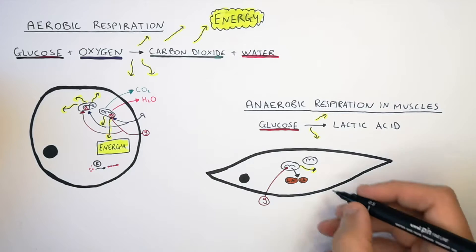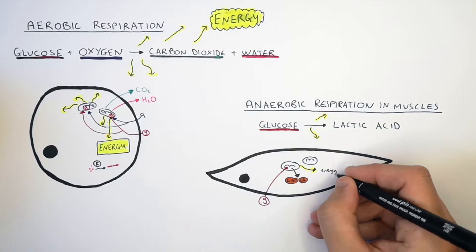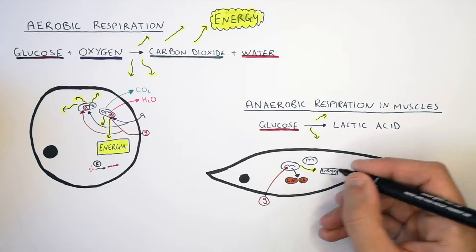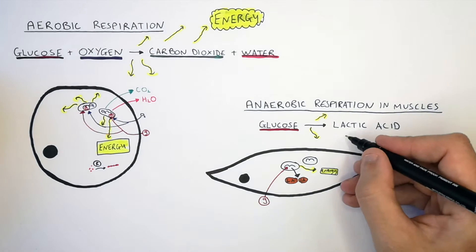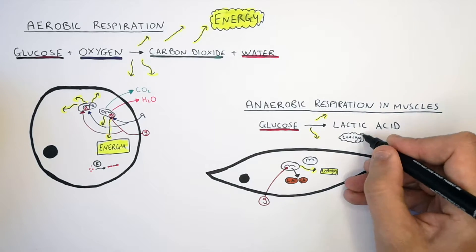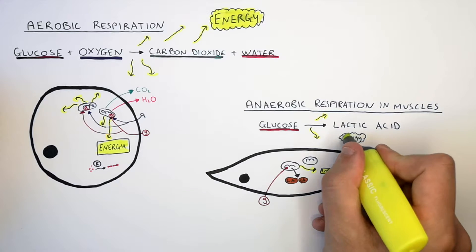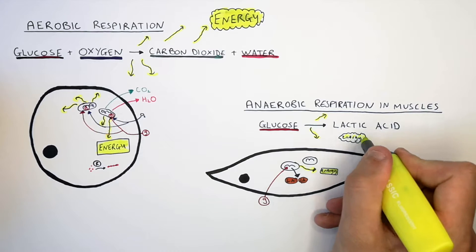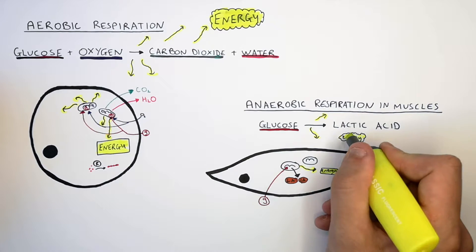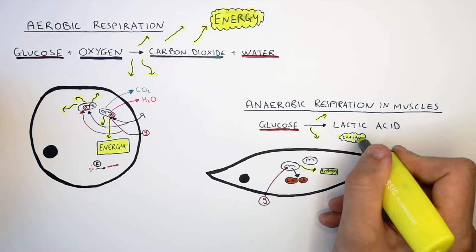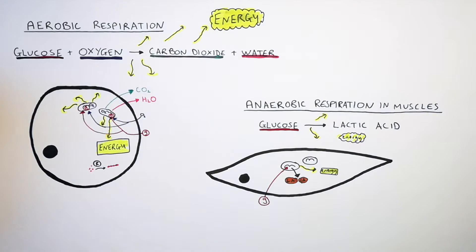However, there is less energy released per glucose molecule combusted in anaerobic respiration, compared to more energy being released by the mitochondria during aerobic respiration in the presence of oxygen.